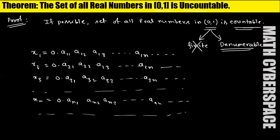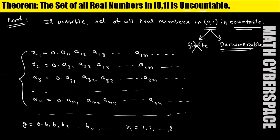Now I am taking an arbitrary element from this list, call it y. Since y comes from these elements, it has the same format: y = 0.b1 b2 b3 ... bn ..., where each b_i is from 1 to 8. The key condition is that b_i ≠ a_ii for each i.